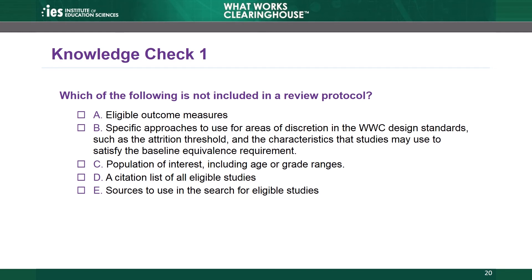It's time for our first Knowledge Check. Knowledge Check 1: Which of the following is not included in a review protocol? A. Eligible outcome measures. B. Specific approaches to use for areas of discretion in the WWC design standards, such as the attrition threshold and the characteristics that studies may use to satisfy the baseline equivalence requirement. C. Population of interest, including age or grade ranges. D. A citation list of all eligible studies. E. Sources to use in the search for eligible studies.